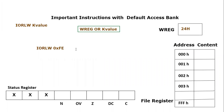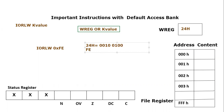Now what is going to happen? The OR operation will be performed between the working register value which is 0x24. Since it's a logical operation, we have to consider the values as binary data, bit by bit. So 0x24 becomes 0010 0100, and 0xFE becomes 1111 1110. For logical OR, either of the inputs should be high.